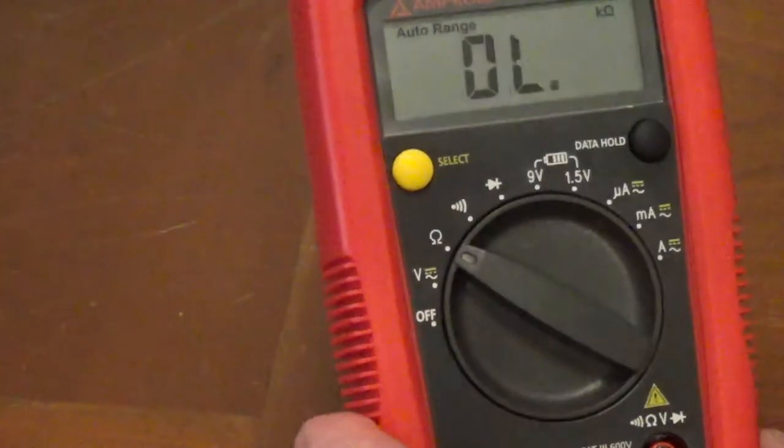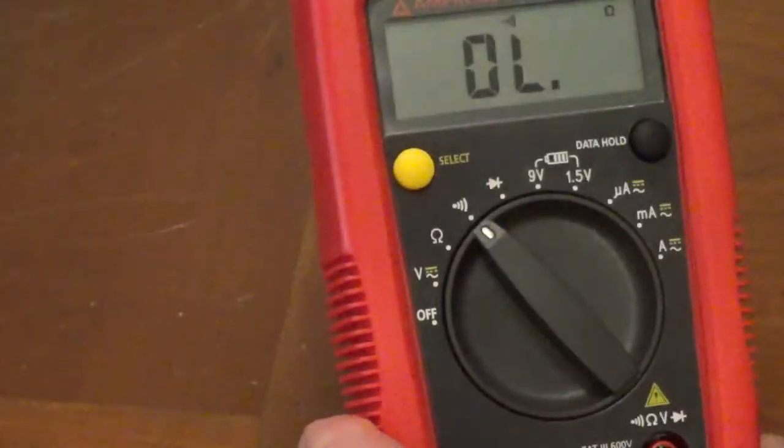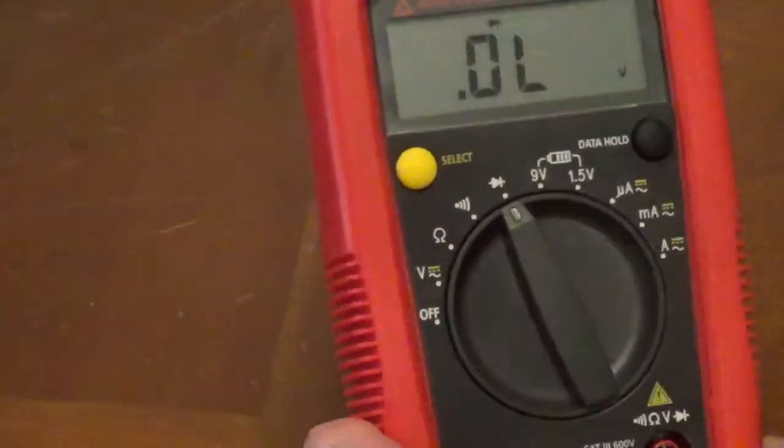The Omega symbol is for measuring resistance. The sound symbol is for testing continuity. The diode symbol is for testing diodes.